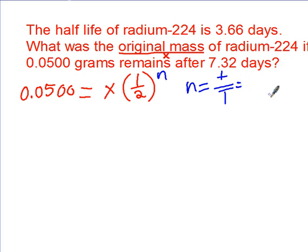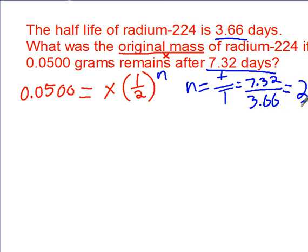So that's equal to time elapsed is this number right here, 7.32, divided by your half-life is this number right here, 3.66. This is a whole number of 2. So n is just 2. So you plug that right in to here. Let's go ahead and plug that in.